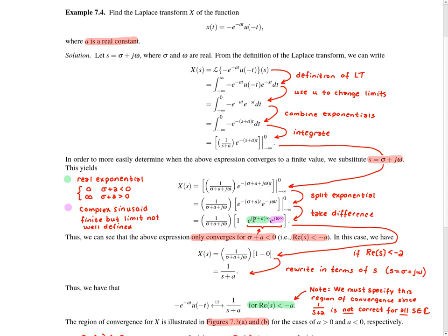The key thing to observe are the two exponential factors highlighted in green and purple. The second term in square brackets will only converge if σ + a < 0. In that case, the green exponential equals zero and the second term drops out. If σ + a is not less than zero, the second term fails to converge. So we assume σ + a < 0, which is equivalent to the real part of s being less than −a.